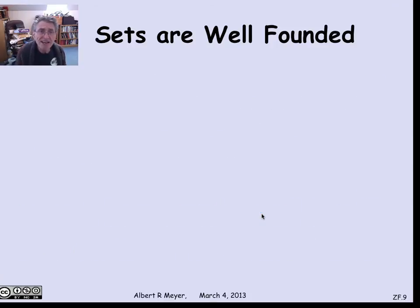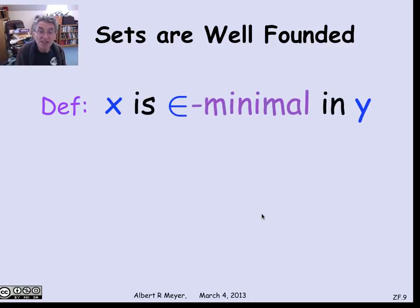How do you say that as an axiom? There's a very elegant way: all sets are well-founded under membership, which means you can't find an infinite sequence of sets where each one has the next one as a member. Let's give a precise way to formulate that.